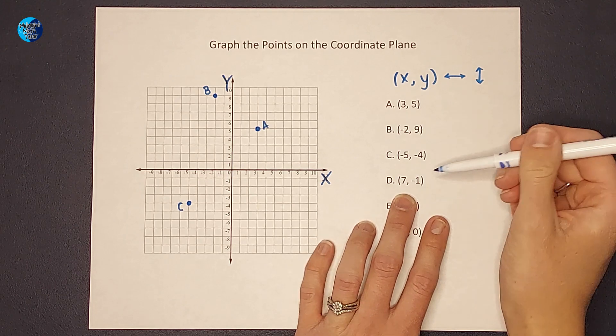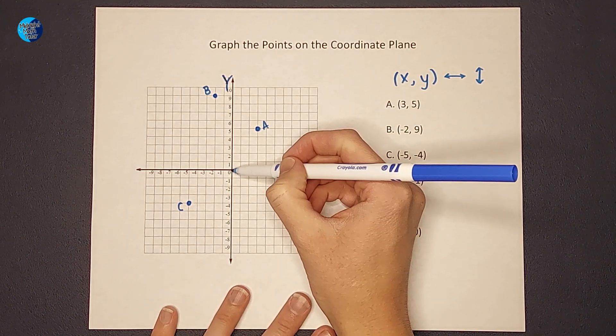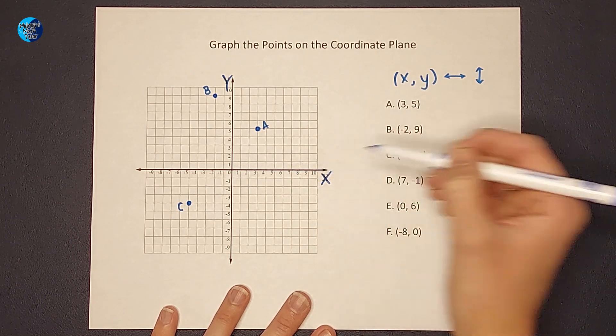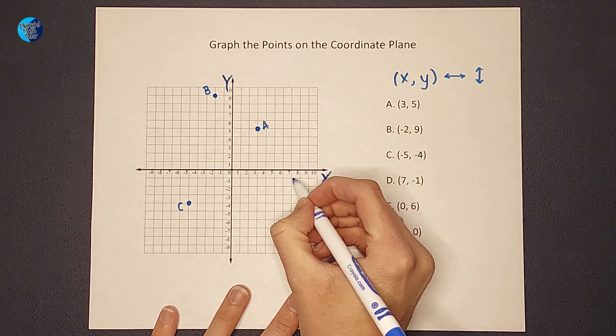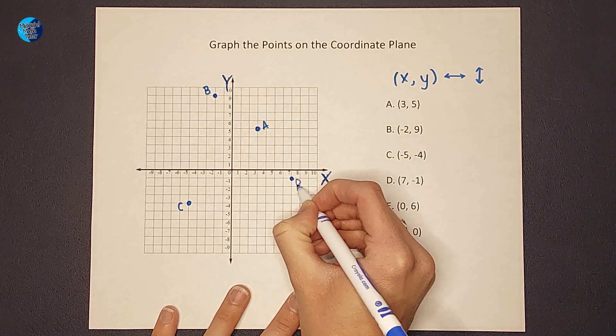For D, my x is positive and the y is negative. So I'm gonna start at 0, 0. Go to the right 7 and down 1. Right there is point D.